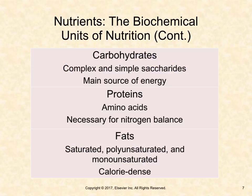Carbohydrates are complex and simple saccharides and provide our main source of energy. Proteins are amino acids, necessary for nitrogen balance. Fats are categorized as saturated, polyunsaturated, and monounsaturated. They are calorie-dense, meaning they provide a large amount of calories in a small amount of food.